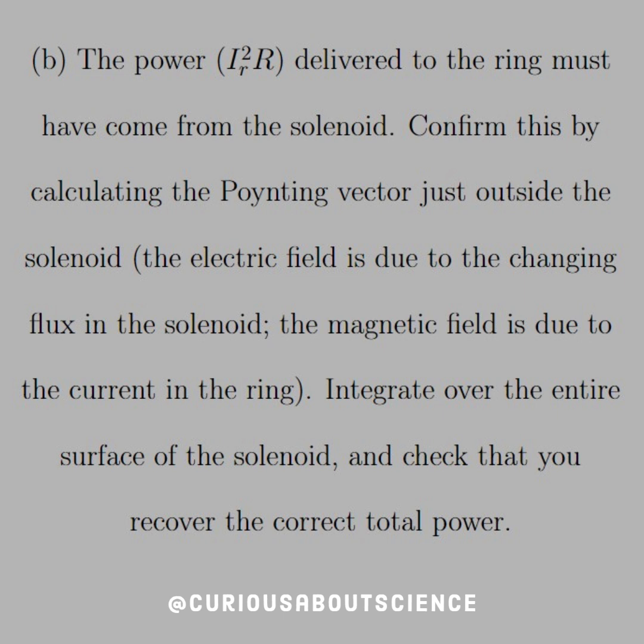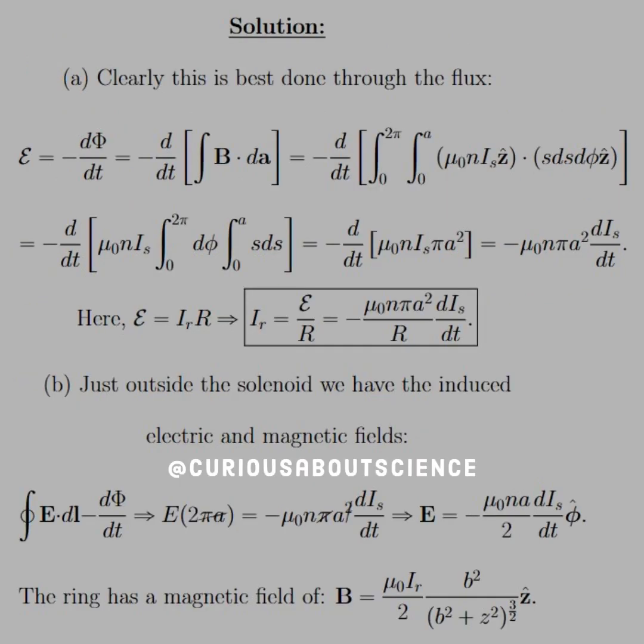The electric field comes from the solenoid and the magnetic field from the ring. Remember, Poynting vector is E cross B. All right, so before we get ahead of ourselves, let's deal with part A.